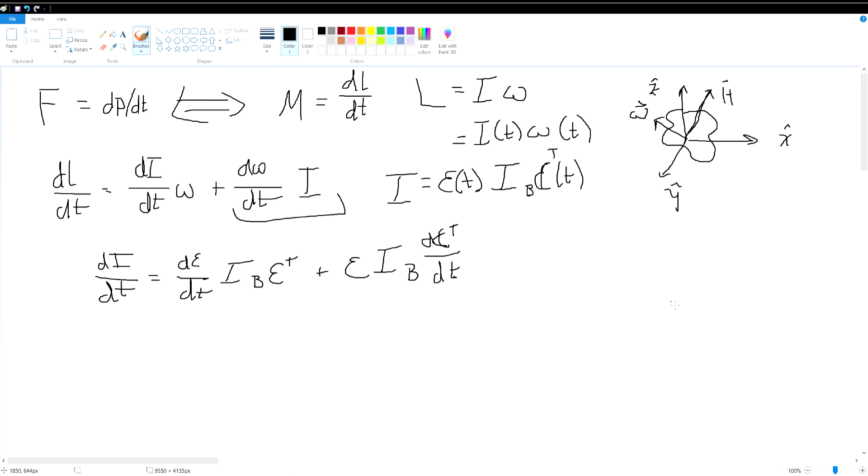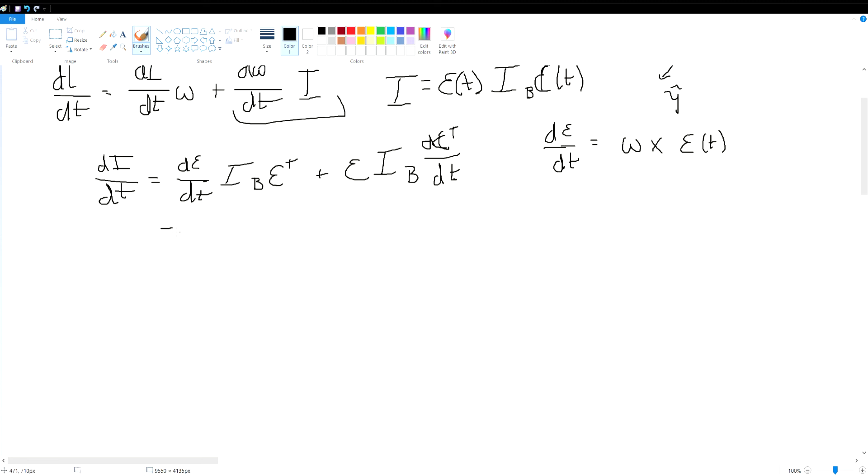So what does this mean for us? Well, we can't just plug this straight back in, we need to also look at what our d epsilon/dt means. And I will not do the proof here, but take my word for it that d epsilon/dt is just the angular velocity crossed with epsilon t.